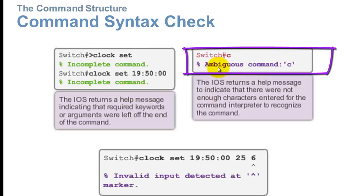This one says ambiguous. I typed in the letter C and nothing else, and the router is saying I don't know what you mean to do. What's C? Because it knows that clock and there's another one that starts with C. What do you want? It doesn't know.